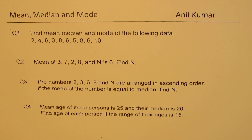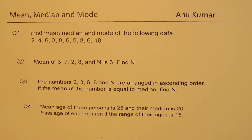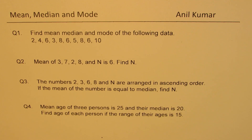I'm Anil Kumar sharing with you some interesting questions based on mean, median, and mode. Here are four questions we are going to answer. Question one: find mean, median, and mode of the following data — two, four, six, three, eight, six, five, eight, six, and ten. Question two: mean of three, seven, two, eight, and n is six, find n. Question three: the numbers two, three, six, eight, and n are arranged in ascending order — if the mean equals the median, find n. Question four: mean age of three persons is 25 and their median is 20, find the age of each person if the range of their ages is 15. You can pause the video, answer these questions, and then look into my suggestions.